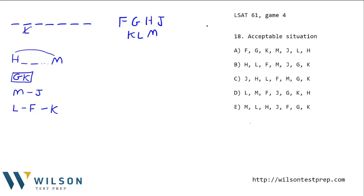LSAT 61 Game 4 is an ordering problem. We have seven verses that have to give their information sessions one at a time, and there are five conditions. The first condition says that between H and M there have to be at least two other sessions — I've written that as H underscore underscore, with dots to indicate there could be more things, then switched across the top to show we don't know which is first.